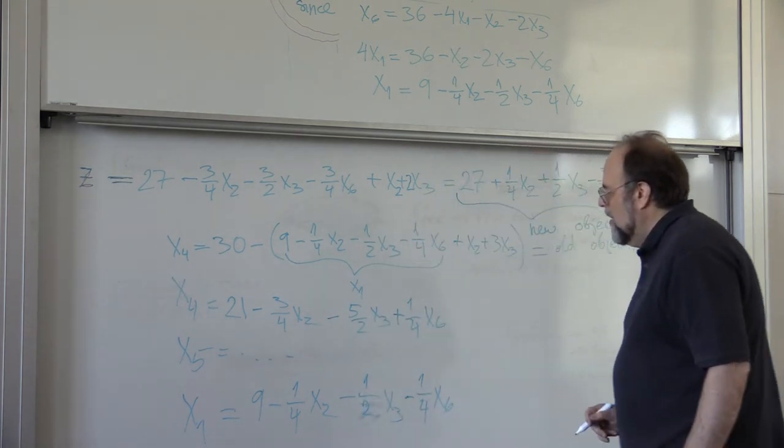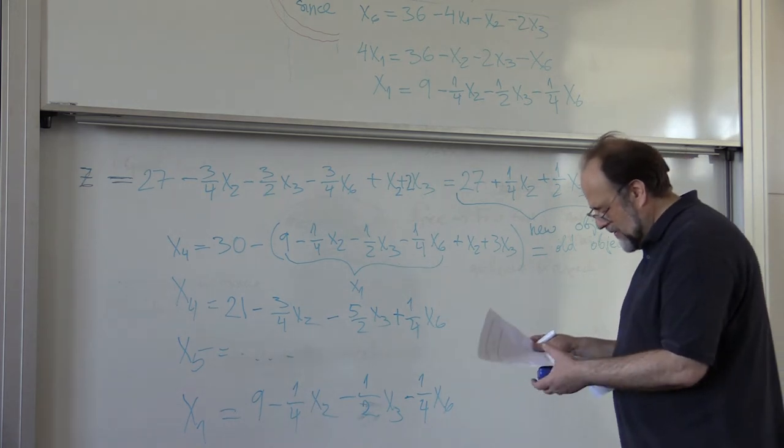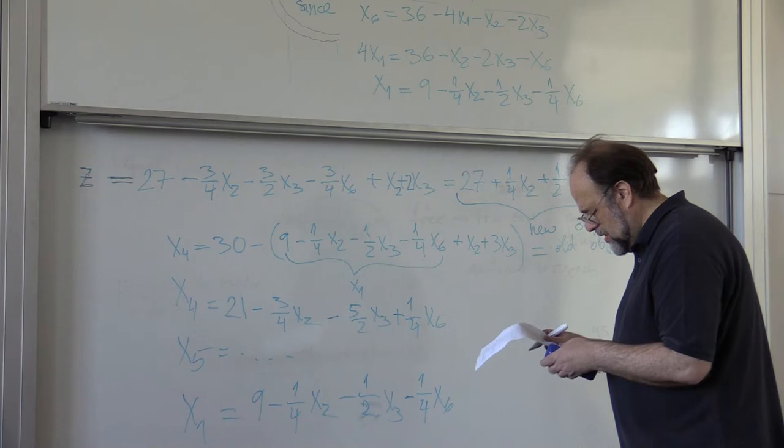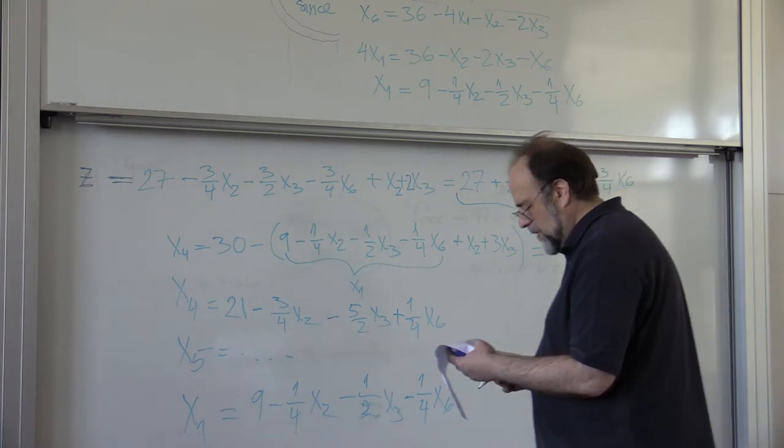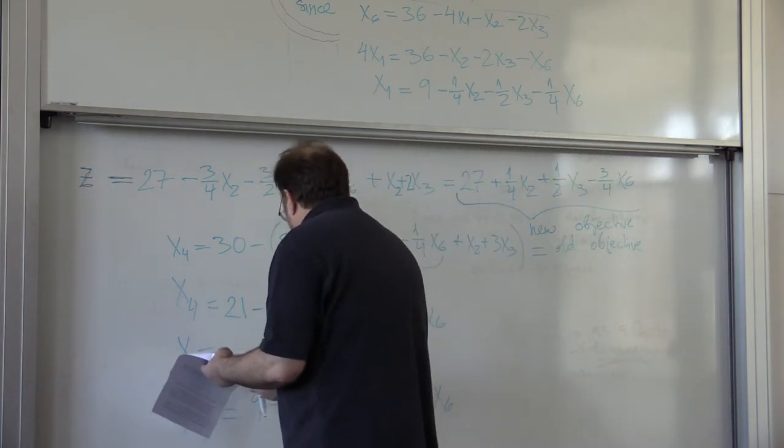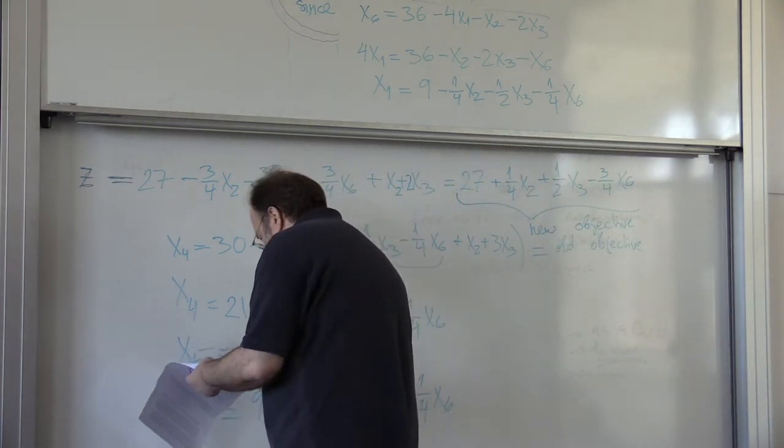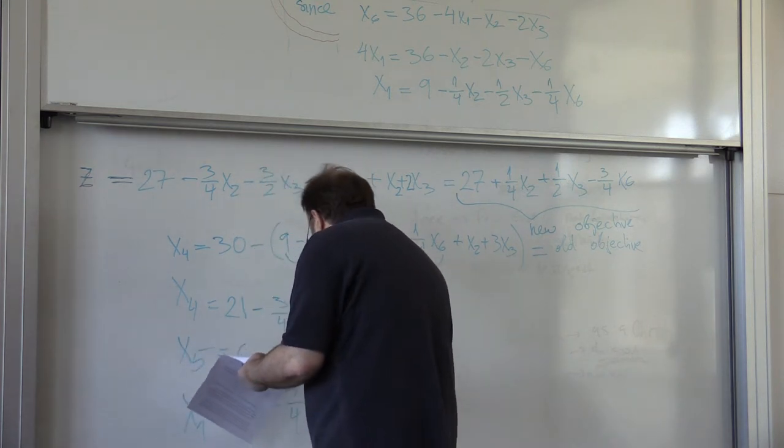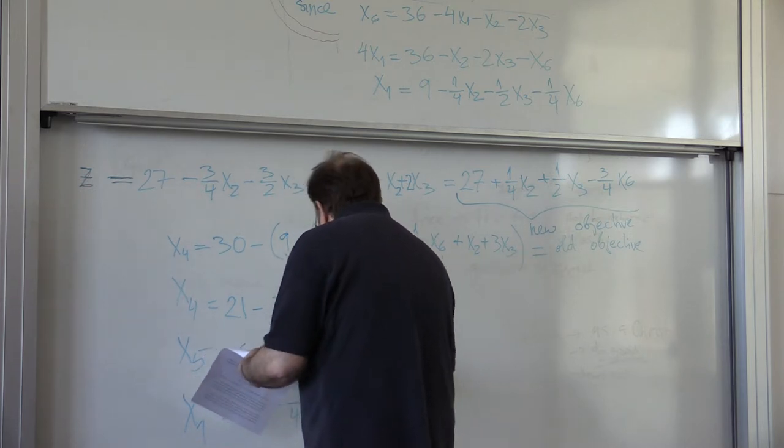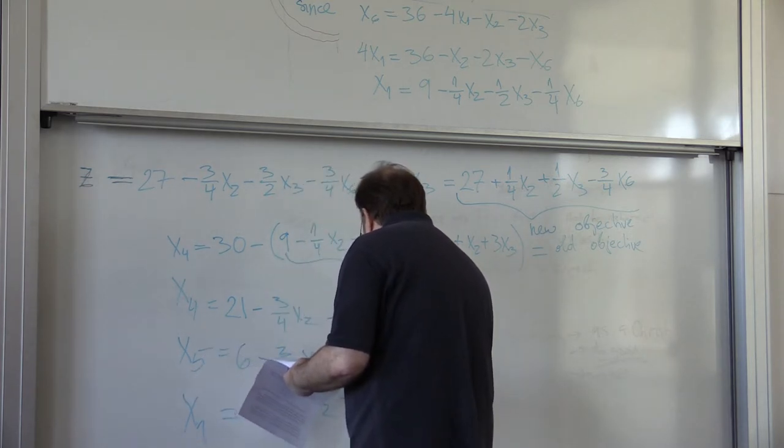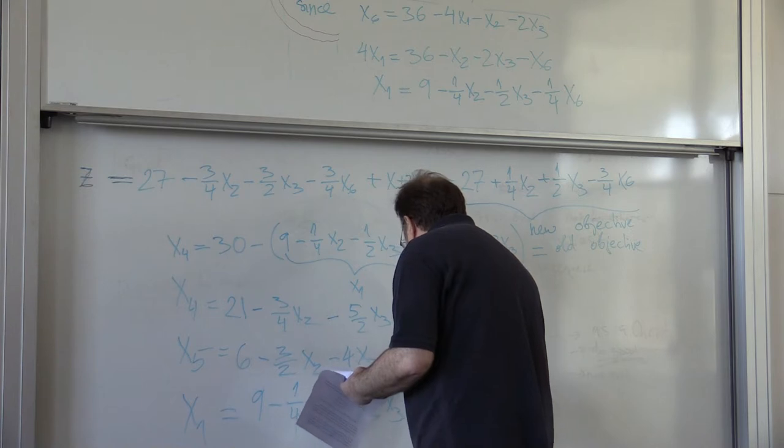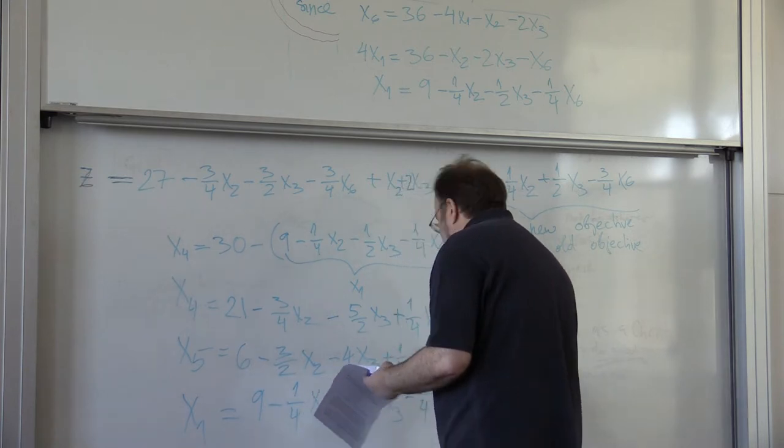What is x5? Let me just write it here. x5 happens to be, I'll just, you can compute it at home, but it turns out to be 6 minus 3 half x2 minus 4 x3 plus 1 quarter x6.